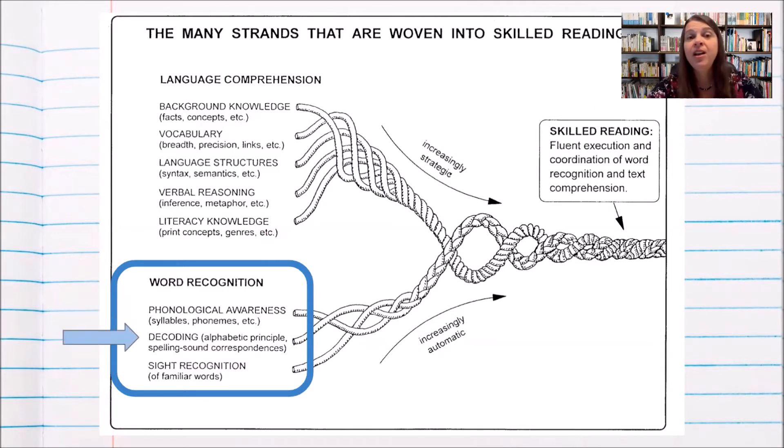Next is decoding. Decoding is taking those sounds and attaching them to letters, whether that is to read a word off of the page or to transcribe a word onto the page through spelling.